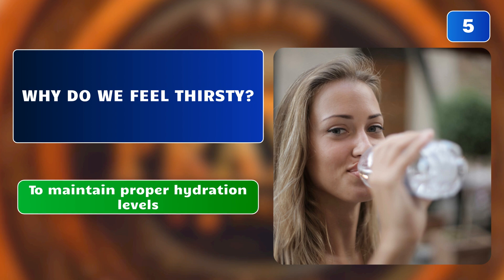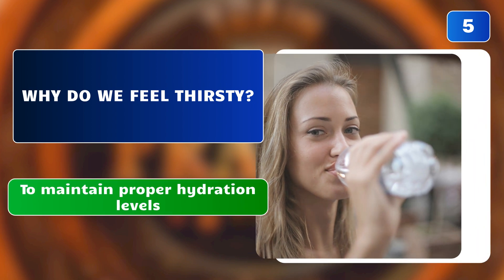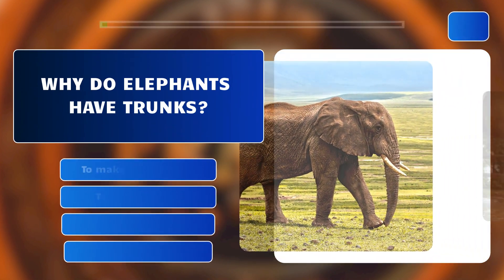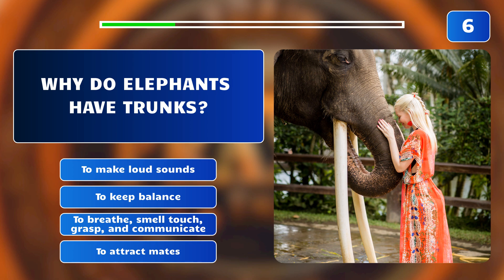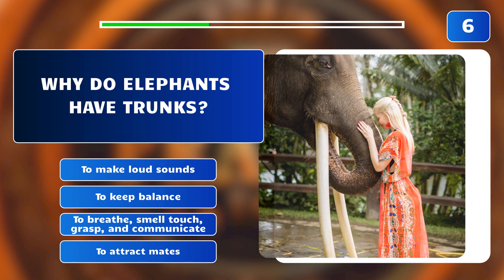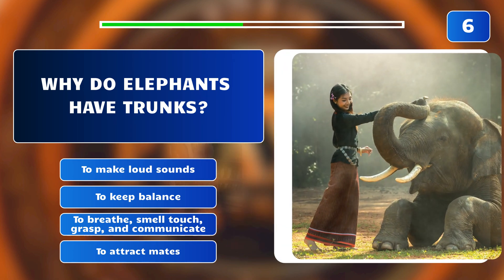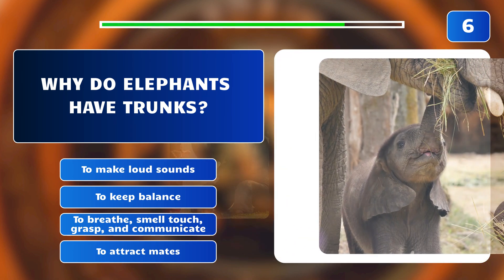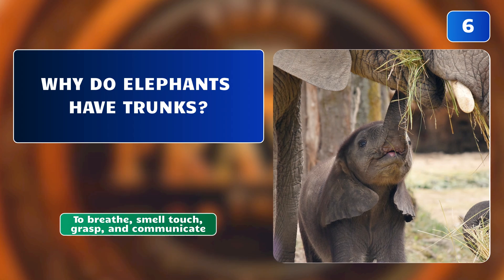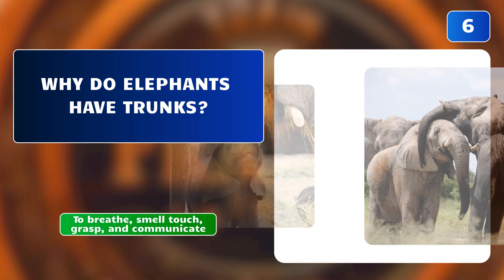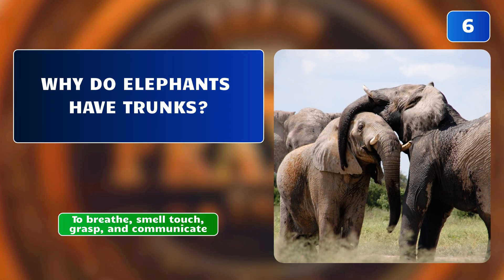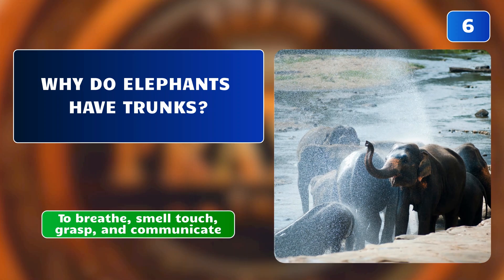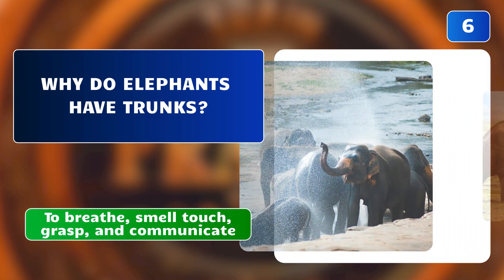Why do elephants have trunks? To make loud sounds? To keep balance? To breathe, smell, touch, grasp, and communicate? To attract mates? The correct answer is: to breathe, smell, touch, grasp, and communicate. Trunks are versatile appendages used for breathing, smelling, touching, grasping, and communication.